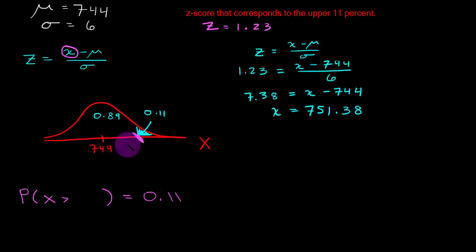Looking at the picture that we have sketched, hopefully that makes reasonable sense, that this would be a value of number of grams slightly above the mean. And if I wanted to write this probability statement in its full glory, I would write 751.38 grams here.